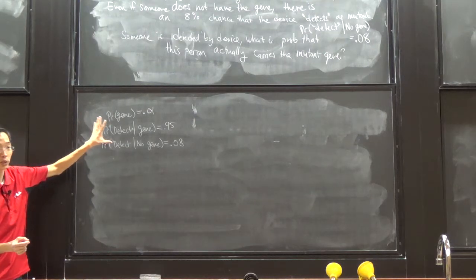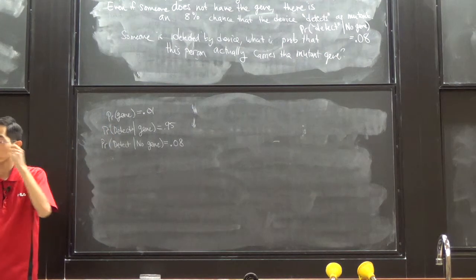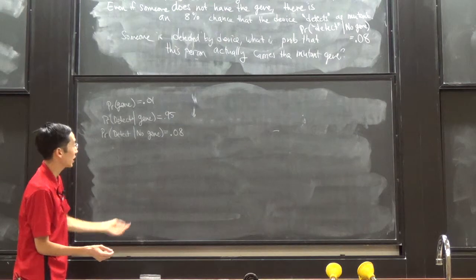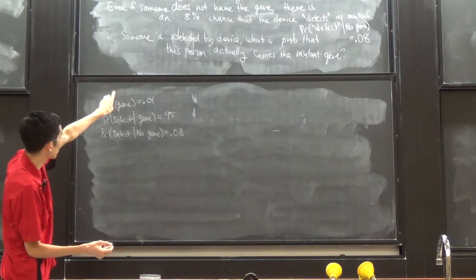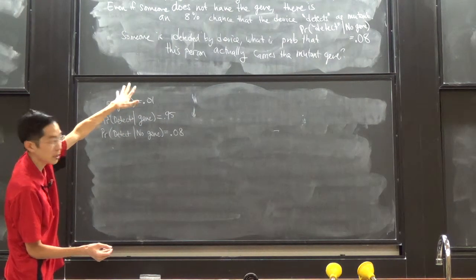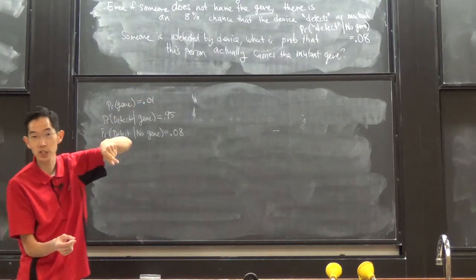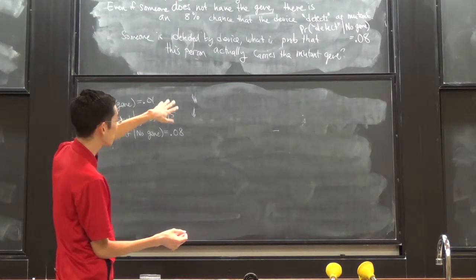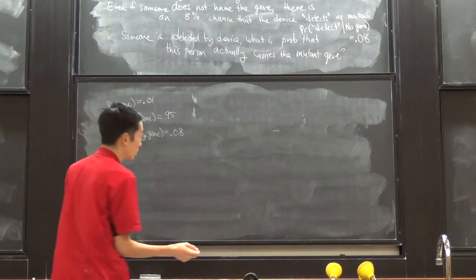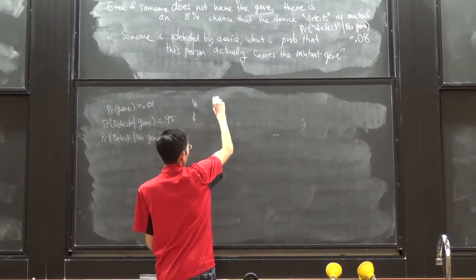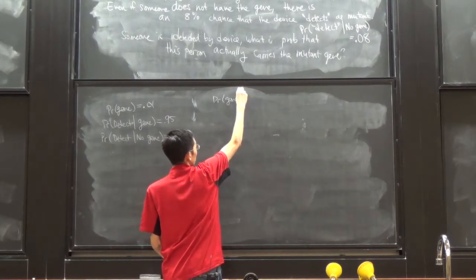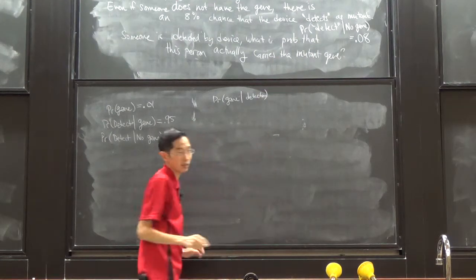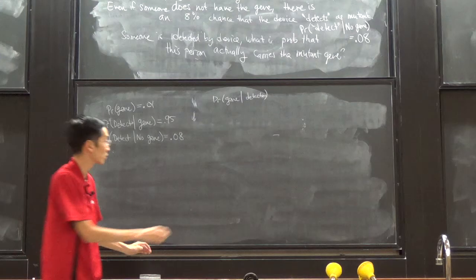Now that we have this, we can draw our probability tree to try to answer the question. We should ask what this question is actually asking. Someone is detected by the device — it could be a true detection or a false detection — and we're asking what's the probability that this person actually carries the mutant gene. So the question is asking: what is the probability that someone has the gene given that the device detects as such?